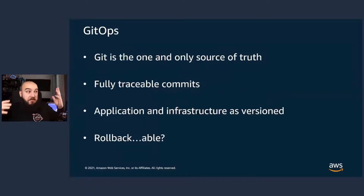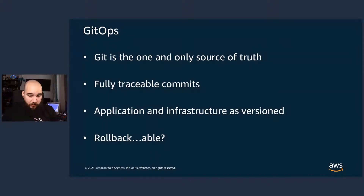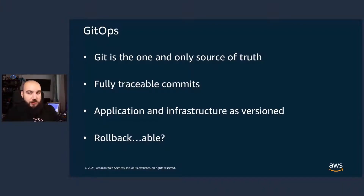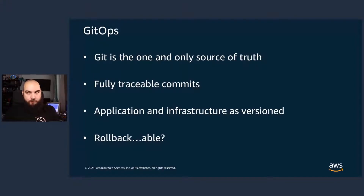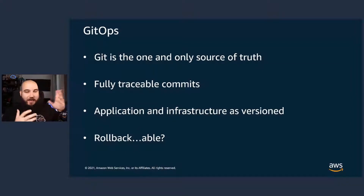In essence, it means that anything you do — any change to your infrastructure — needs to be inside a Git repository. No more hammers. Any infrastructure code push, any change to configuration — all of those things should be in a repository. All of them should be automatically deployed. All of them should be rollbackable. You should be able to roll back to a previous version of a thing.